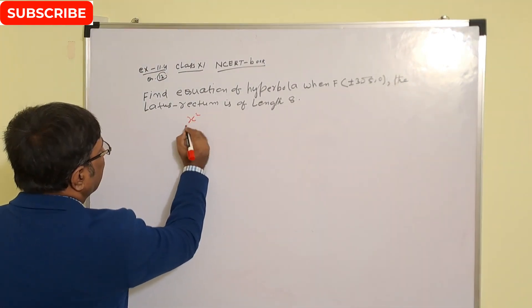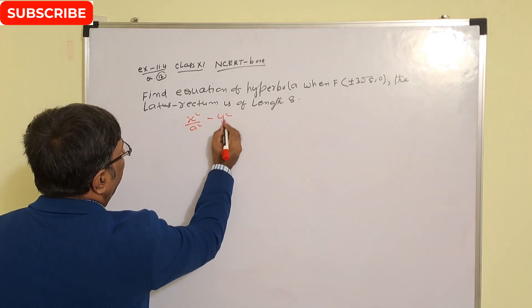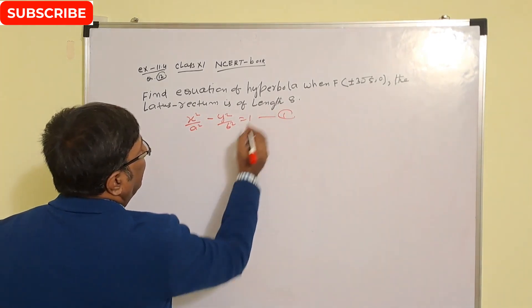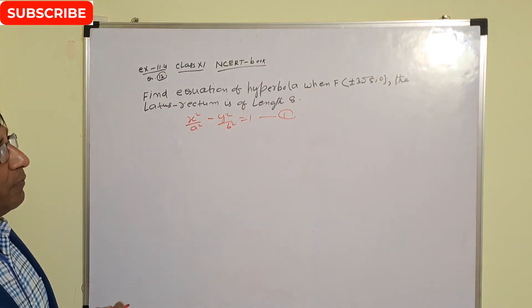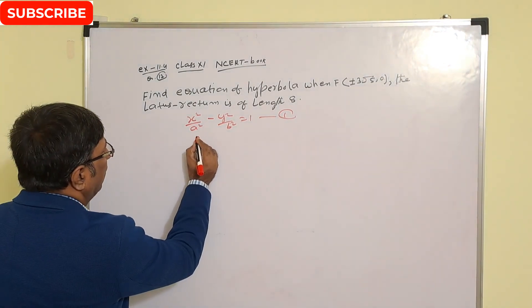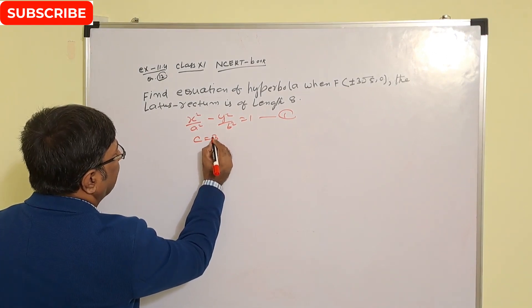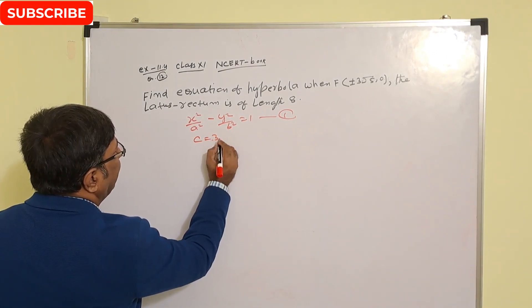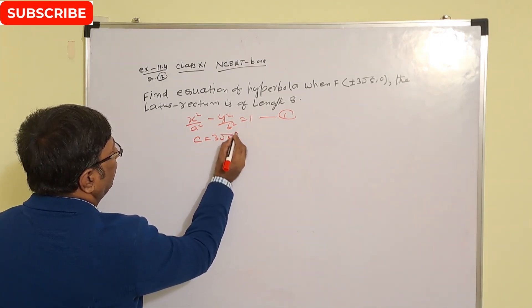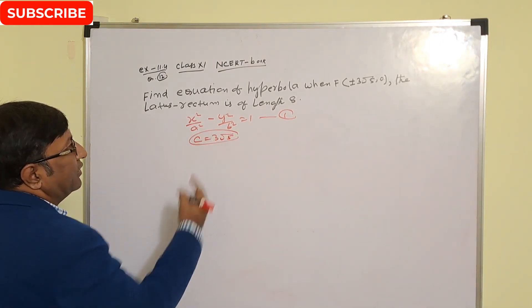So the equation of hyperbola will be x² / a² − y² / b² = 1. Now, since foci are given as (±c, 0), we can write c = 3√5.